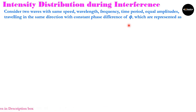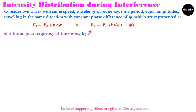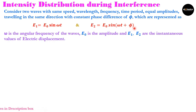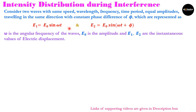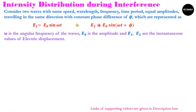These waves are represented as E1 = E0 sin(ωt) and E2 = E0 sin(ωt + φ). Here we are taking electric field for these two waves, where omega is the angular frequency, which is the same, so frequency is the same.